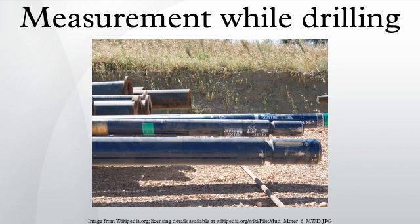Positive pulse tools briefly close and open the valve to restrict the mud flow within the drill pipe. This produces an increase in pressure that can be seen at surface. The digital information can be encoded in the pressure signal using line codes or pulse position modulation. Negative pulse tools briefly open and close the valve to release mud from inside the drill pipe out to the annulus. This produces a decrease in pressure that can be seen at surface. The digital information can be encoded in the pressure signal using line codes or pulse position modulation.